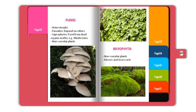Next is bryophyta. Bryophyta are non-vascular plants. Two examples are mosses and liverworts. You can see liverworts on the top and mosses at the bottom right side.